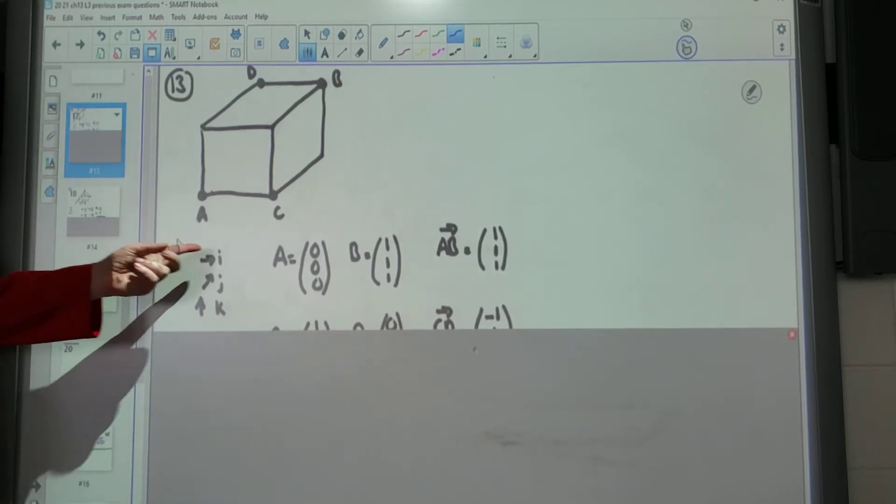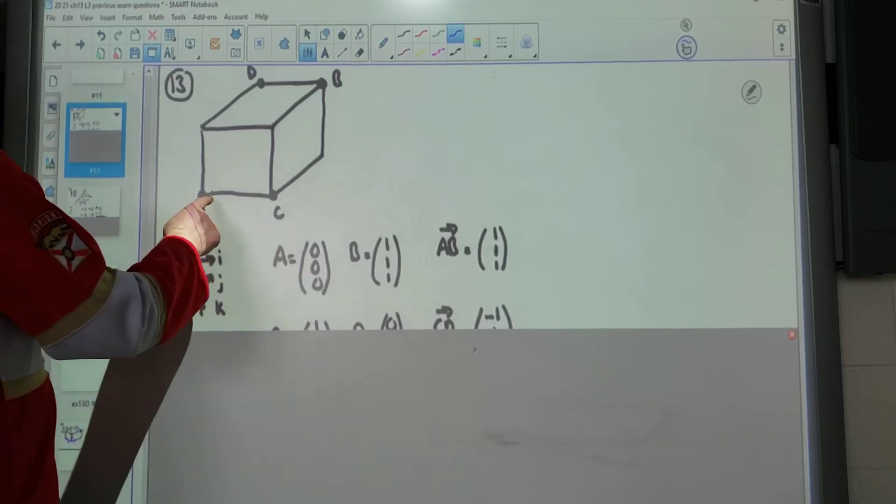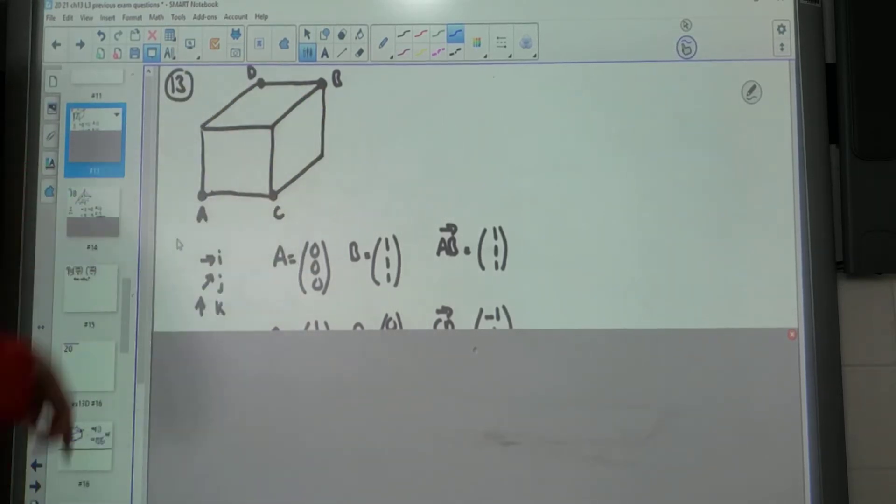Now I decided to call this I, J and K and I also decided, well I called this the origin point to begin with and I decided the length of each of these sides on the cube would be 1 because I thought that would make it simpler.